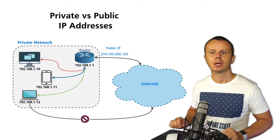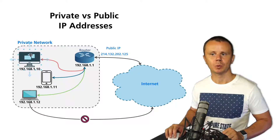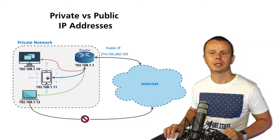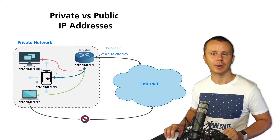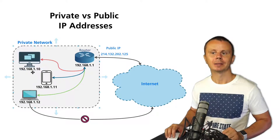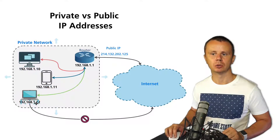In this example, you can see a private network with several devices like a laptop or mobile phone. I have used private IP addresses from the range 192.168.1, and in the diagram you see different IP addresses like .10, .11, or .12.